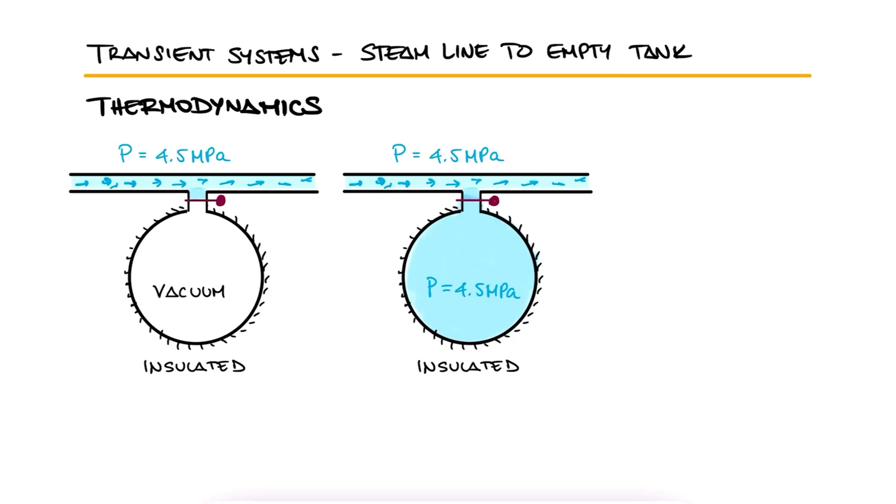If the final temperature of the steam in the tank is 600 Celsius, determine the temperature of the steam in the supply line and the flow work per unit mass of the steam.